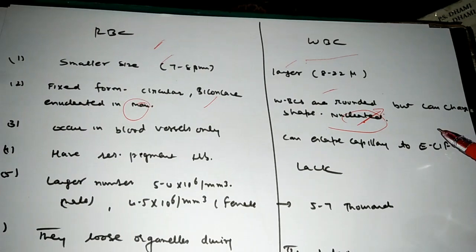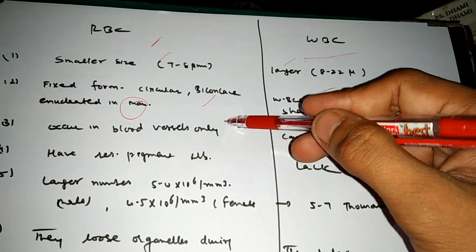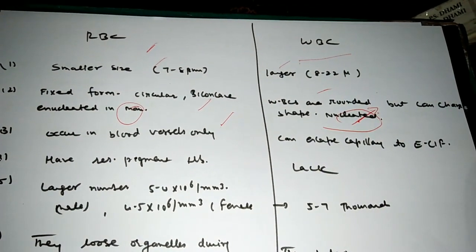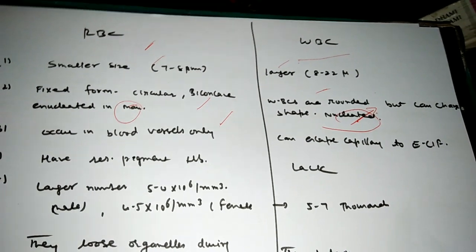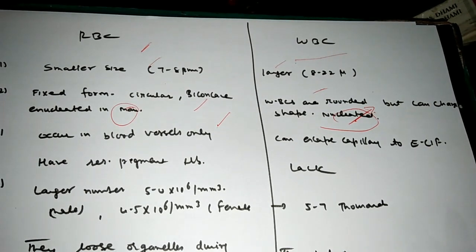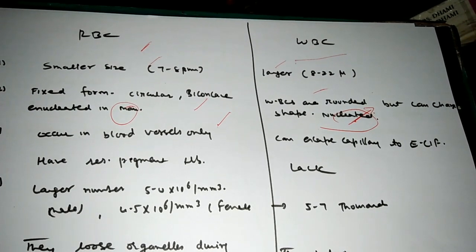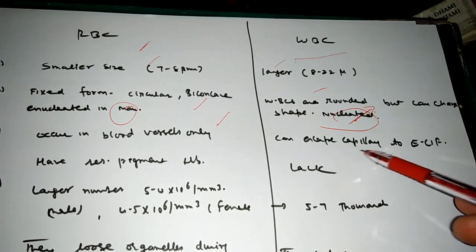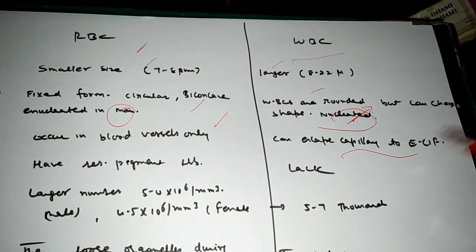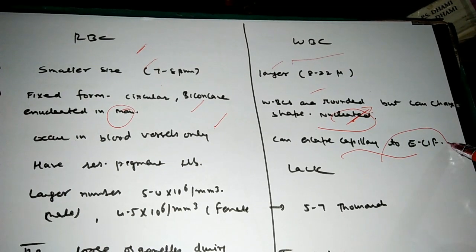Next, they occur in the blood vessels only. RBC are found only in blood vessels. They do not flow in the gut or in the body cavity. The blood always flows in the vessels that form the circulatory system in the mammal and human.